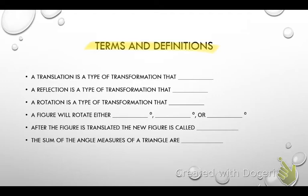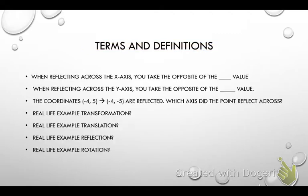After the figure is translated, the new figure is called image. The sum of the angle measures of a triangle are 180 degrees. When reflecting across the x-axis, you take the opposite of which value? Y value. When you reflect across y, you take the opposite of? X.